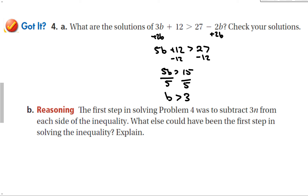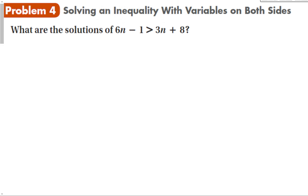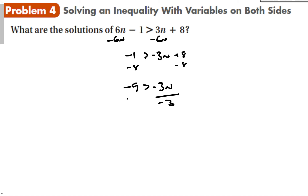The first step in problem 4 was to subtract 3n from both sides. What else could have been the first step? We could have subtracted 6n from both sides, giving negative 1 is greater than negative 3n plus 8. Subtracting 8 gives negative 9 is greater than negative 3n. When I divide, I have to switch the inequality sign, giving n is greater than 3. My first answer said n greater than 3, and this gives 3 is less than n — the same thing by the reflexive property. But having to remember to switch adds one more chance to make a mistake, so doing it the first way is preferred.